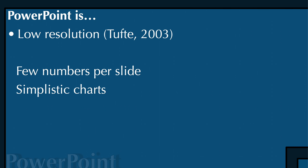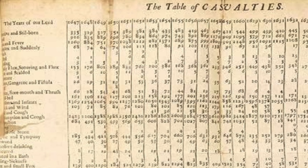Unfortunately, PowerPoint is also somewhat low resolution — you can only fit a few numbers per slide and charts are simplistic. Compare this to a classic historical table of casualties, which lists years across the top from 1647 onward and types of casualties along the bottom. That table contains precise, dense information. A PowerPoint chart with a small matrix and a couple of points per axis simply can't match that level of detail — finding, say, infant-related deaths in 1652 would be very hard.